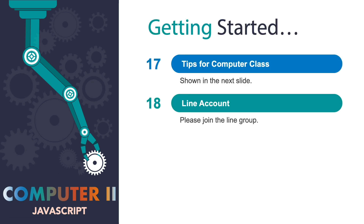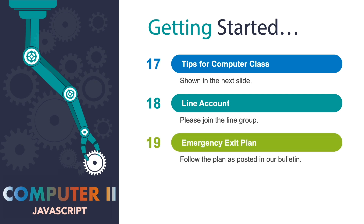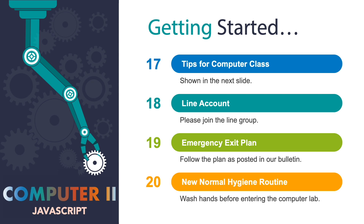Number eighteen is about our Line group account. I am going to create a Line group for our computer class, so please join so that we can communicate through this account. Number nineteen is the emergency exit plan — please follow the plan as posted in our bulletin. Number twenty is about the new normal daily hygiene routine, which includes washing hands before entering the computer lab, as well as following school policies such as social distancing.